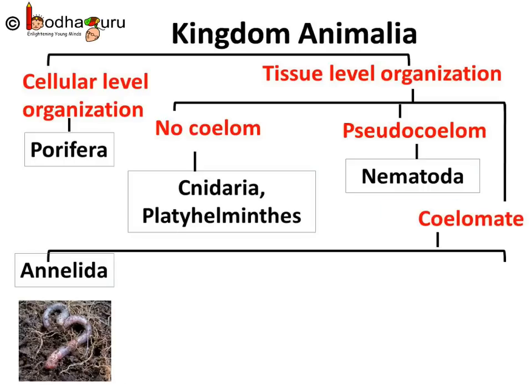Animals which have a body cavity or coelom are divided into many phyla based on different characteristics. They are all called coelomates as they have a real coelom or body cavity. These animals are triploblastic, which means their body is formed from three layers of cells. Based on different features, coelomates are divided into different phyla, for example phylum Annelida.